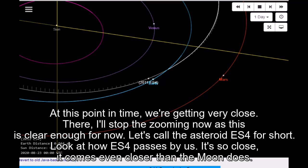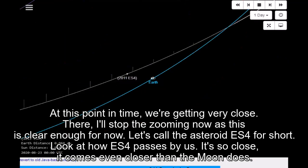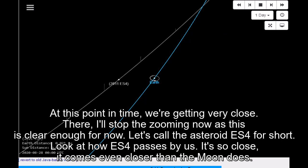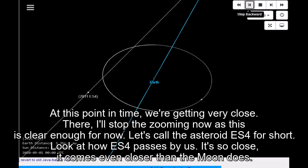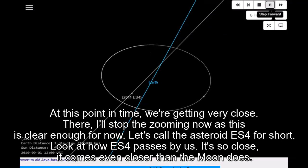At this point in time, we're getting very close. There, I'll stop the zooming now as this is clear enough for now. Let's call the asteroid ES4 for short. Look at how ES4 passes by us. It's so close, it comes even closer than the Moon does.